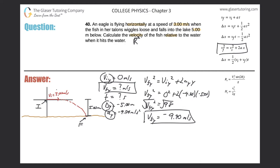Now, what's the velocity in the x-direction? There is no acceleration in the x-direction in this free-fall problem, so the initial x-velocity equals the final x-velocity. The initial x-velocity was 3.00 m/s, therefore the final velocity in the x-direction is also 3.00 meters per second.